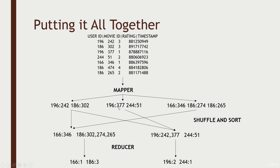For example, we have ratings from user ID 196 spread across two different nodes, and those both need to get aggregated together as part of the shuffle and sort operation. The good news is that MapReduce does this for you — you don't have to write any code for it to happen. It uses a series of merge steps to perform a merge sort of all this information as it funnels down to the reducer stage, but conceptually you can think of it as things getting shuffled around and sorted — it's just using some tricks to make that more efficient.